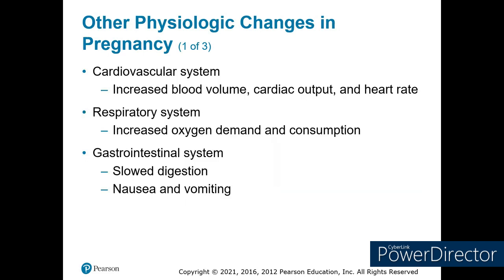As the fetus grows, the cardiovascular system increases in size to compensate for the extra circulatory demand. There is increased blood volume, cardiac output, and heart rate. The respiratory system must also increase supply to meet rising demand. The GI system slows digestion, causing frequent nausea and vomiting, mostly from pressure the uterus places on the digestive system.